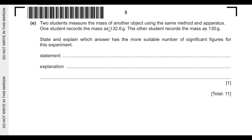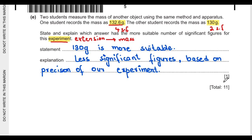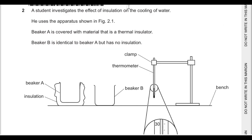Part E says two students measure the mass of another object using the same method. One student records the mass as 132.6 grams and the other records it as 130 grams. State and explain which answer has a more suitable number of significant figures. The number 132.6 has four significant figures and 130 has two significant figures. The number with fewer significant figures is more suitable because the precision of our measuring instrument is not that high.